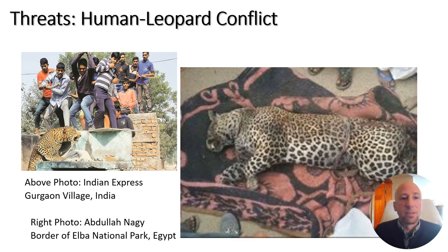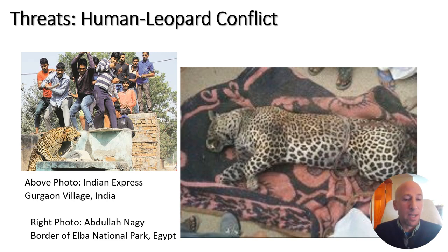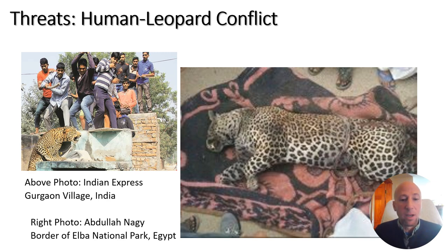Human-leopard conflict is another worrying threat — not only when leopards come into human habitation where people are concerned about their safety, but also where leopards attack livestock and people kill them in retaliation. This photo was sent to me by Abdullah Nagy where this leopard was killed on the border of Elba National Park in Egypt. This is the first documented case of a leopard in that region in years, and now the animal is dead. It's not clear whether there are any more leopards in Egypt at all — this was the last documented one.